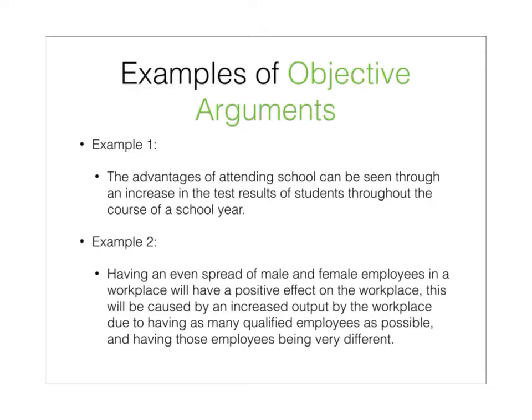Examples of Objective Arguments. Example 1: The advantages of attending school can be seen through an increase in the test results of students throughout the course of a school year. Example 2: Having an even spread of male and female employees in a workplace will have a positive effect on the workplace. This will be caused by an increased output by the workplace, due to having as many qualified employees as possible, and having those employees being very different.